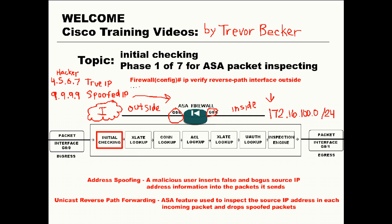You need to issue the following command in global configuration mode to enable unicast reverse path forwarding. The command is: ip verify reverse-path interface, and then the segment that you want to enable unicast reverse path forwarding on — in this case, outside.